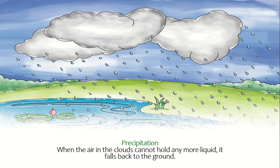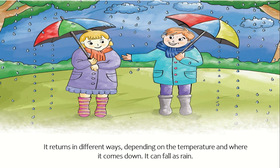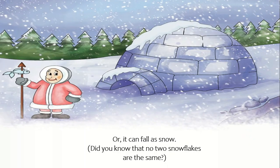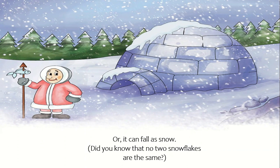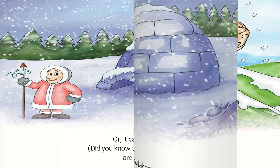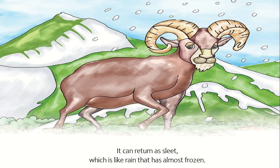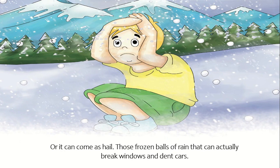Precipitation: When the air in the clouds cannot hold any more liquid, it falls back to the ground. It returns in different ways, depending on the temperature and where it comes down. It can fall as rain, or as snow — did you know that no two snowflakes are the same? It can return as sleet, which is like rain that has almost frozen, or it can come as hail — those frozen balls of rain that can actually break windows and dent cars.